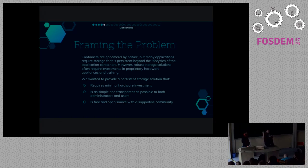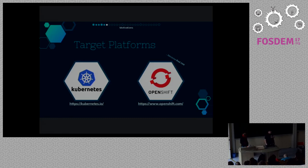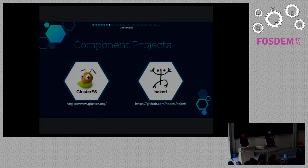And while we're at it, let's make it free and open source with the support of community, because we're Red Hat. Our target platforms are Kubernetes and OpenShift, and the technologies we're using to solve this problem are GlusterFS and Heketi.